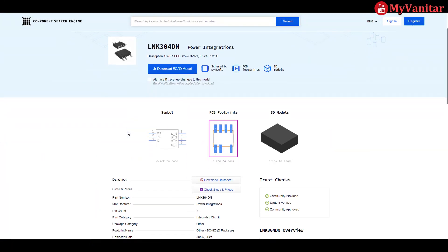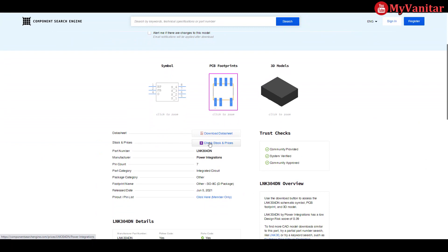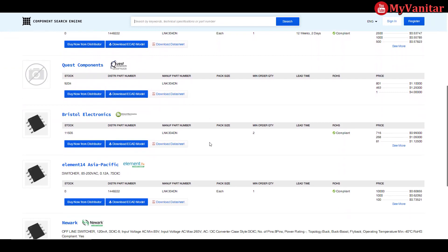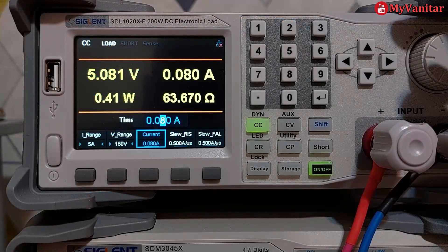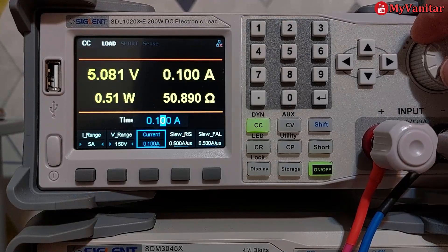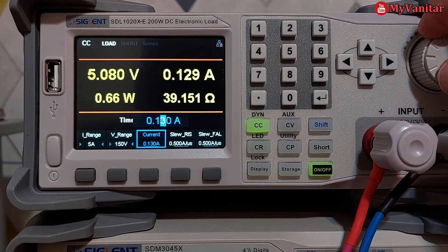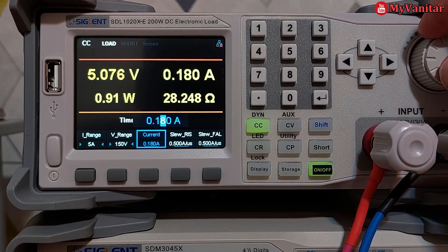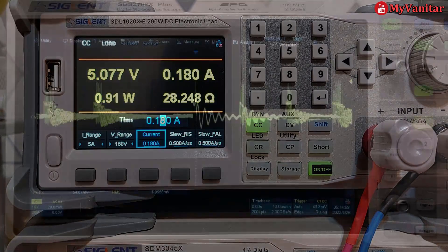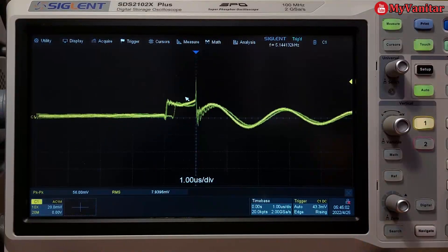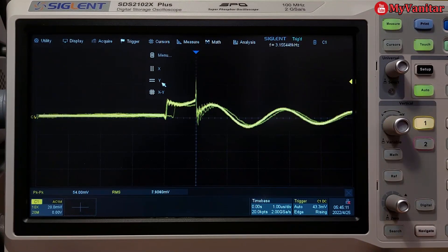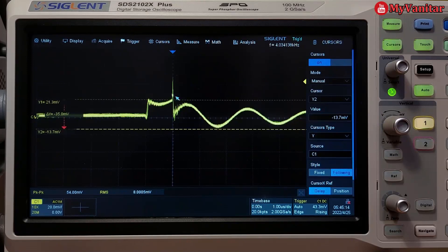To find and purchase original components for the project, I used the component search engine website. To test the current handling and output stability, I used a Siglent SDL1020X DC load. And finally, to examine the output noise, I used a Siglent oscilloscope. Isn't it cool? So let's get started.